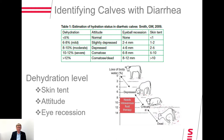The skin tent is something I don't see done a lot, but I always felt it was a really good tool. You pick up a little piece of skin on the neck, lift it up, and count how long it takes for the skin to return to normal. When the attitude of the calf is depressed, the eyeball is in about half a centimeter, and it takes between two and five seconds for the skin to flatten, then we're looking at a calf that needs intravenous fluid therapy.